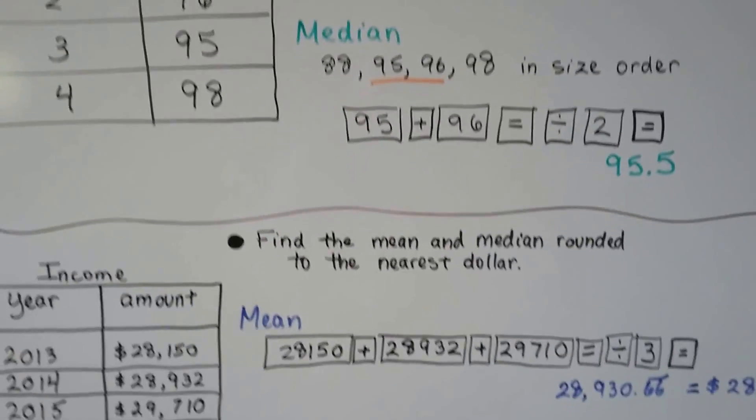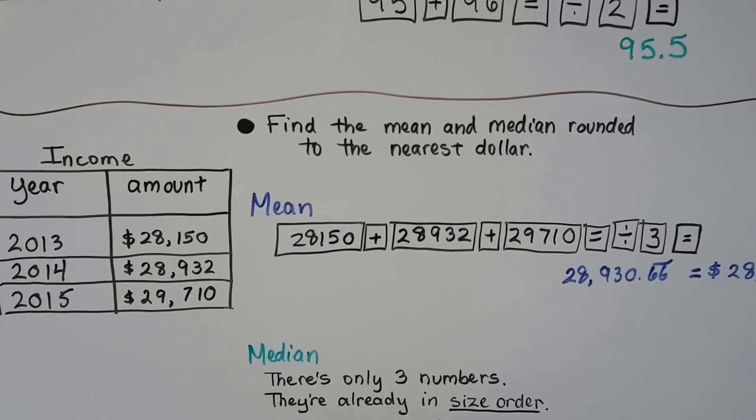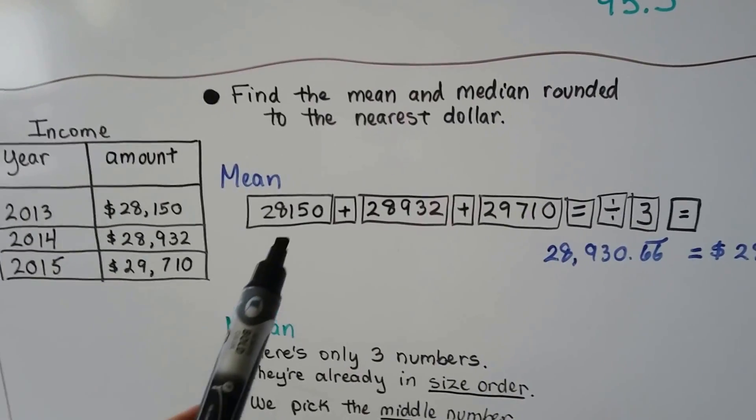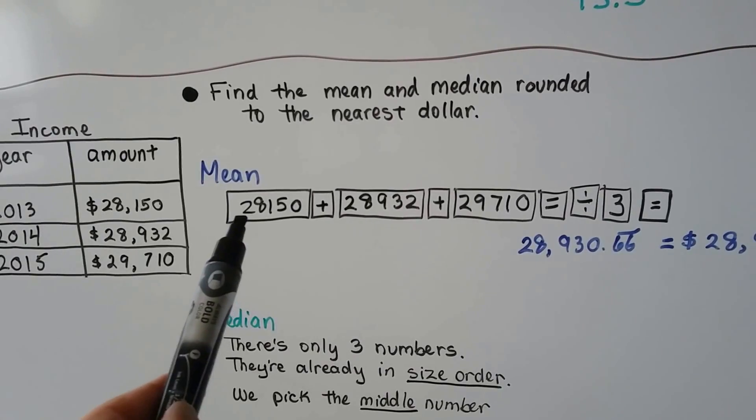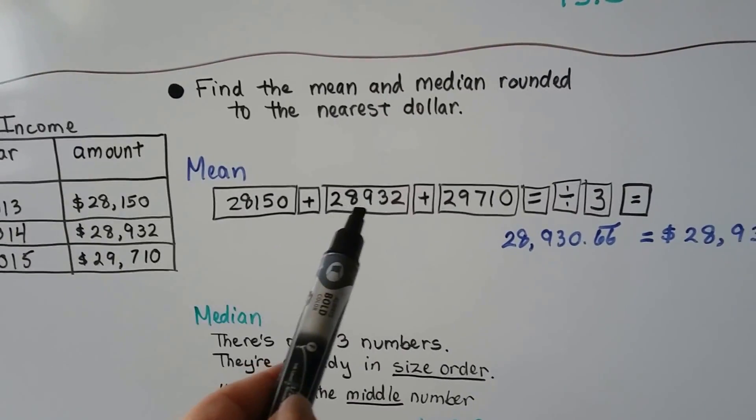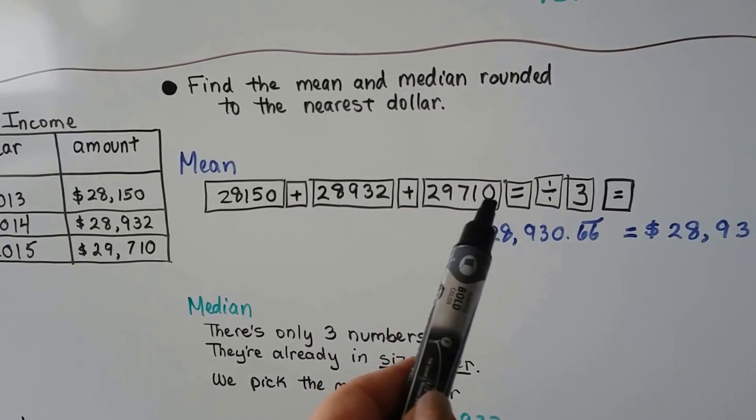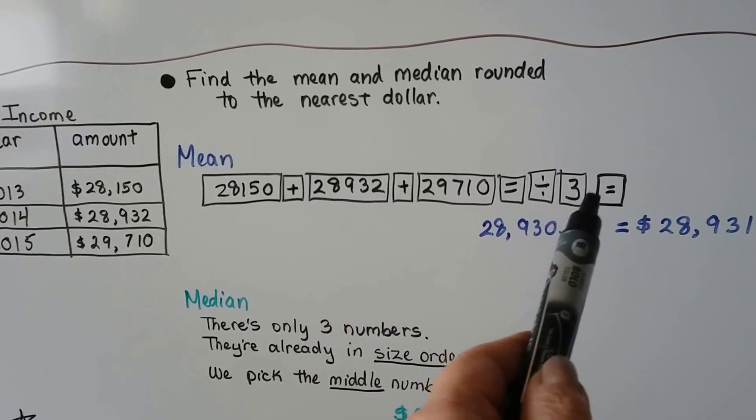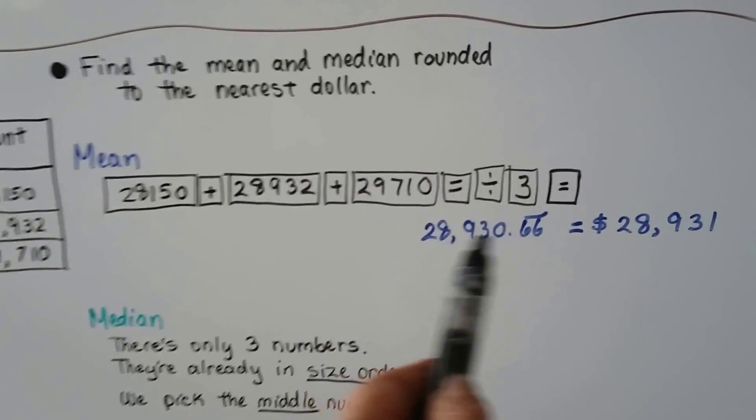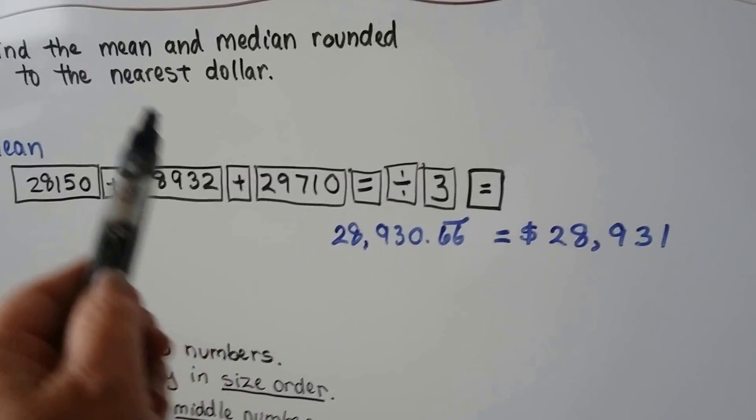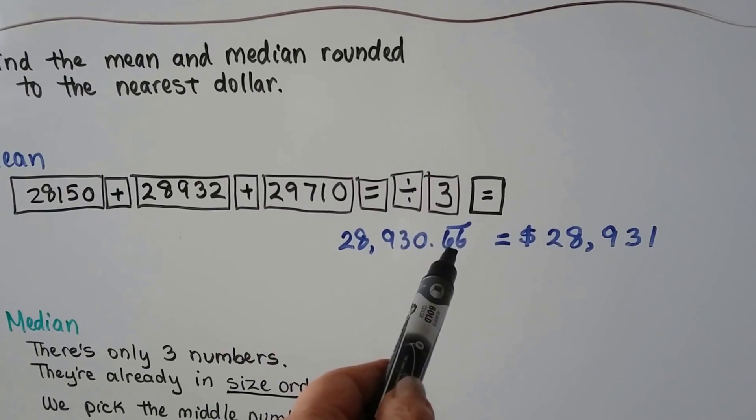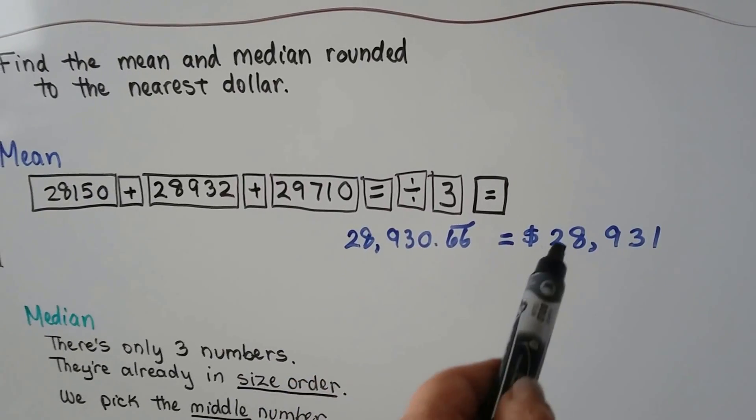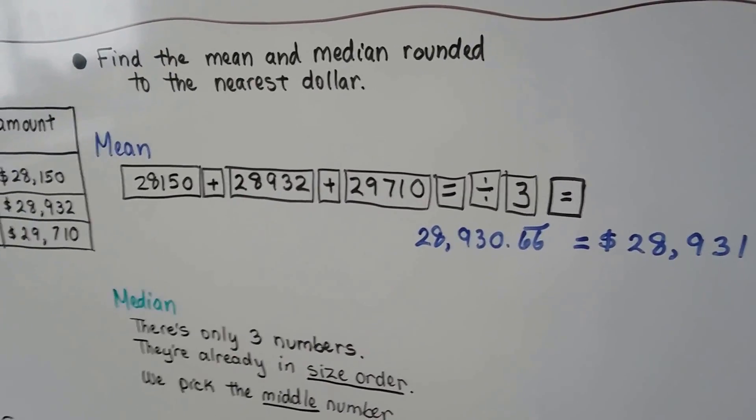This one says find the mean and median rounded to the nearest dollar. So here we have three incomes for three years. To find the mean, the average, we add them. We don't need the commas. We add 28150 plus 28932 plus 29710. We hit the equal sign, then we hit the division sign, and because there's three numbers, we divide by three and hit equal. We're going to get this number, and the six is going to keep repeating, but it says to round it to the nearest dollar. So 66 cents is closer to a dollar than it is to zero. So we're going to round this zero up to a one, and we get $28,931 rounded to the nearest dollar.